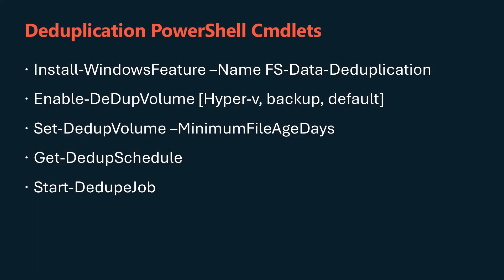To install data deduplication, run the following PowerShell command as an administrator: Install-WindowsFeature -Name FS-Data-Deduplication. To configure a volume for deduplication, use the Enable-DedupVolume command and specify the usage type. The options are Hyper-V, for volumes hosting virtualization workloads; Backup, for volumes hosting backup workloads; and Default, for volumes hosting general workloads such as file shares.